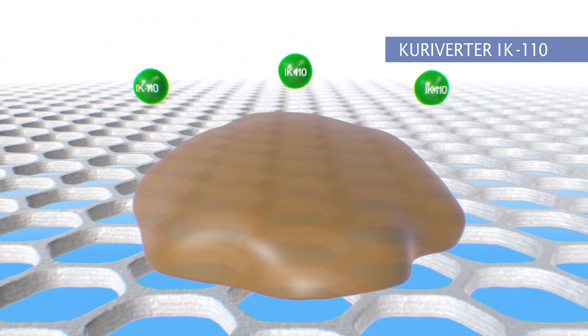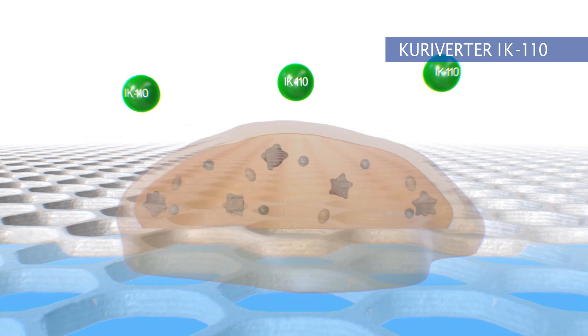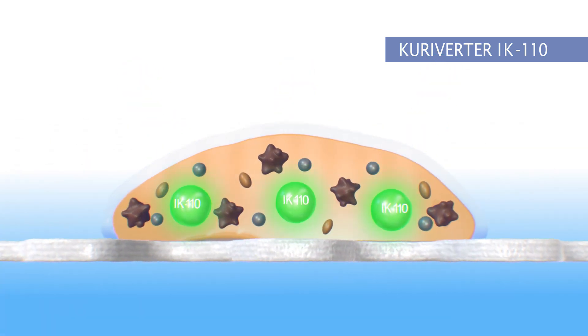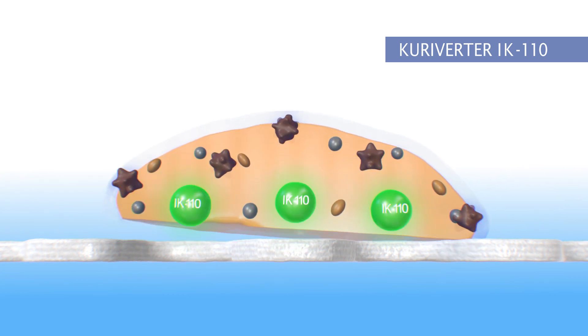The Kuriverter IK110 has high permeability, penetrating deep into the biofouling as a powerful agent to remove it from the RO membrane.